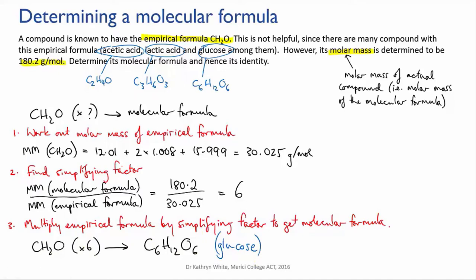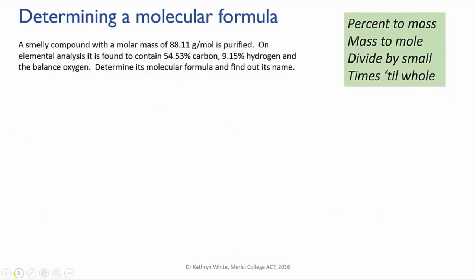Now let's try a problem where we go all the way from percentage composition through to the molecular formula. A smelly compound with a molar mass of 88.11 grams per mole is purified. On elemental analysis, it's found to contain 54.53% carbon, 9.15% hydrogen, and the balance oxygen. Determine its molecular formula and find out its name.